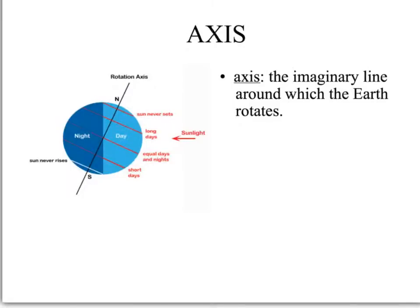Our next vocabulary word is axis. The axis is the imaginary line around which the earth rotates in science. Looking at this picture, we can see the earth's axis and then a representation of summer in the northern hemisphere.